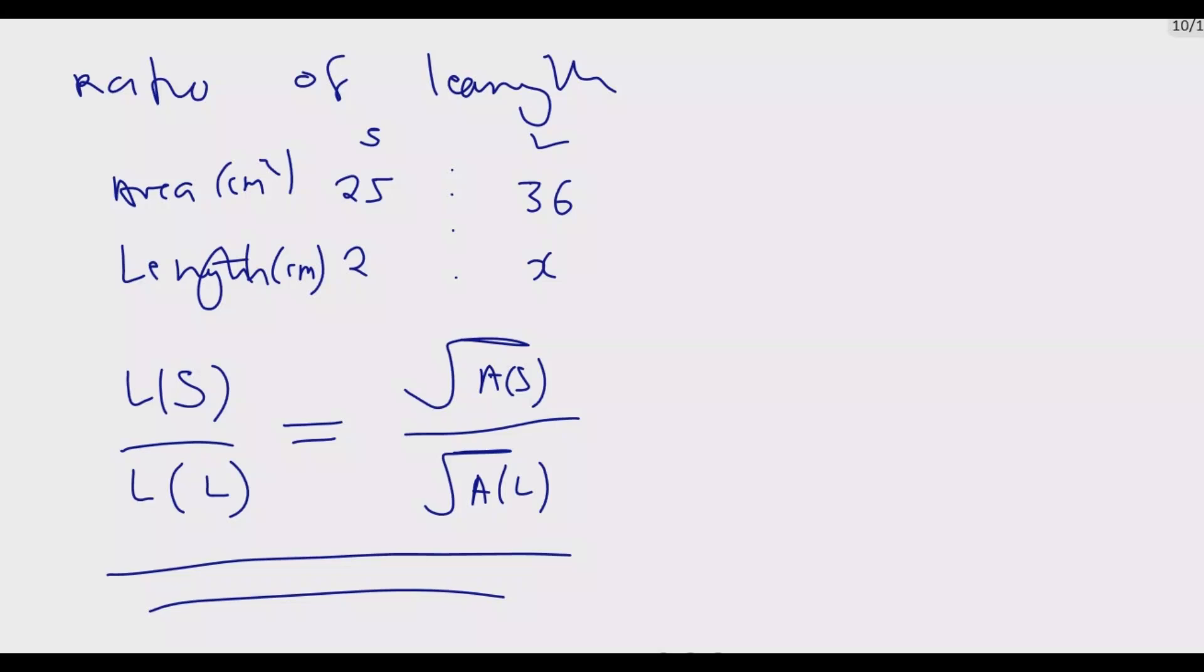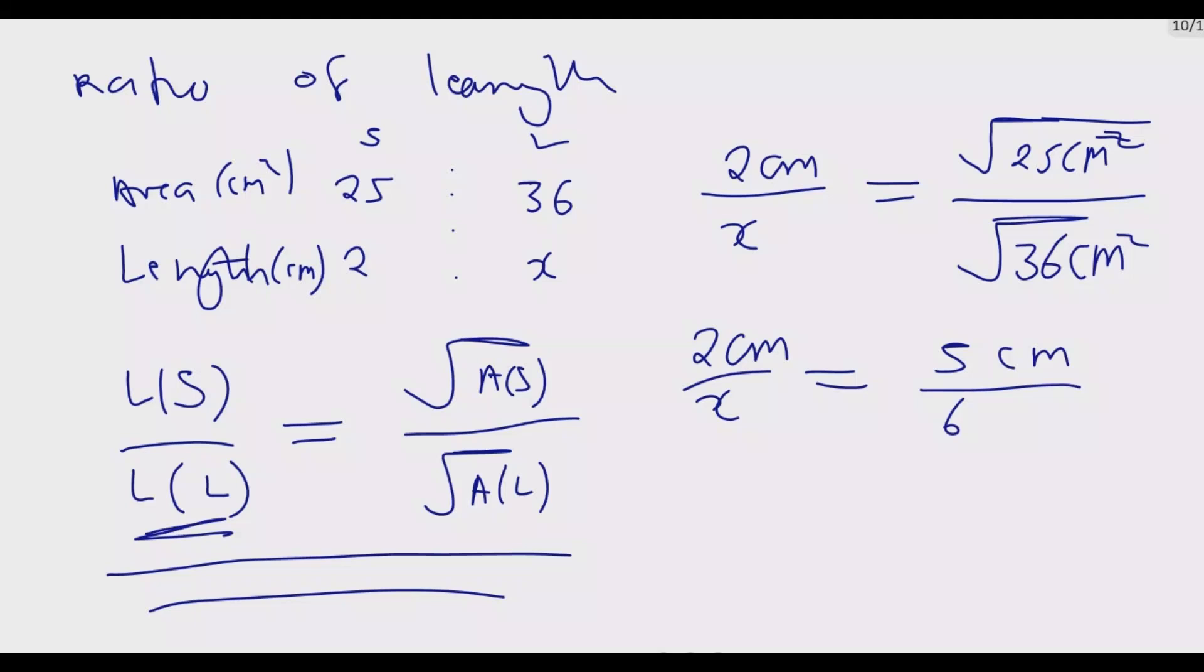We know the length of the small one is 2 centimeters divided by X, which we're looking for. This equals the square root of 25 centimeter square divided by the square root of 36 centimeter square. So 2 centimeters over X equals 5 centimeters over 6 centimeters.